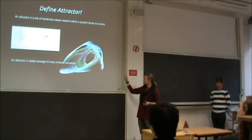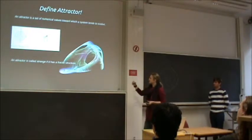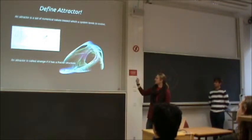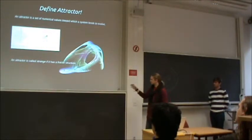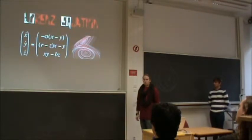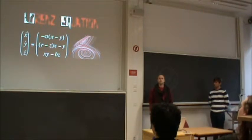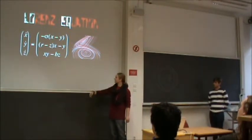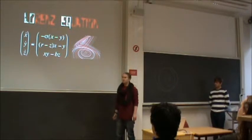A strange attractor is somehow like the attractor itself is attracting. It also has a fractal structure, though it's not really visible without some transformation. The first strange attractor that was found was the Lorenz attractor — this is why Lorenz is so famous. You can see the chaotic map and the attractor displayed here.